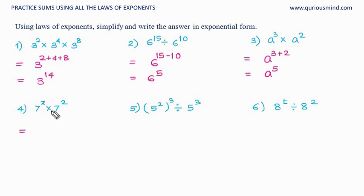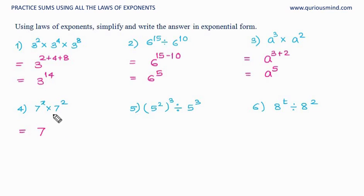Here again the base is same, so the answer's base remains same. Powers will get added irrespective of whether it is an alphabet or number, because it is multiplication — so it will be 7 raised to x plus 2.